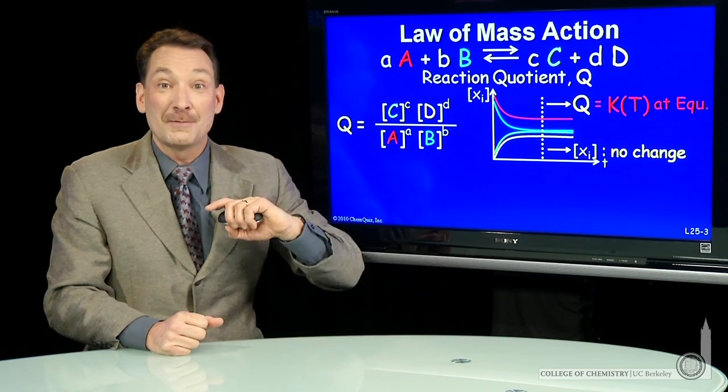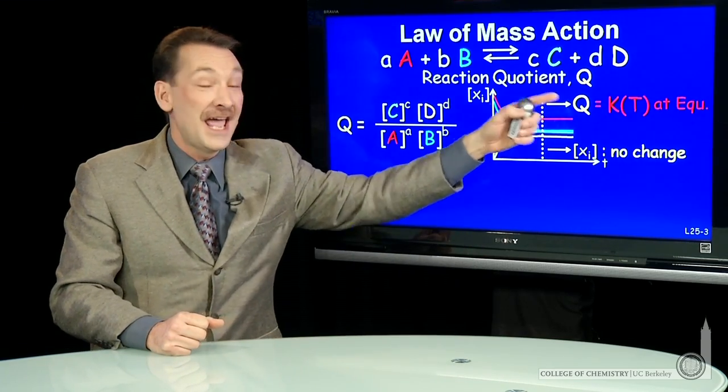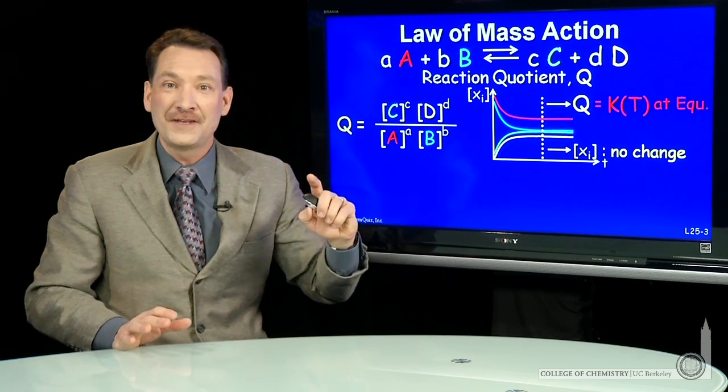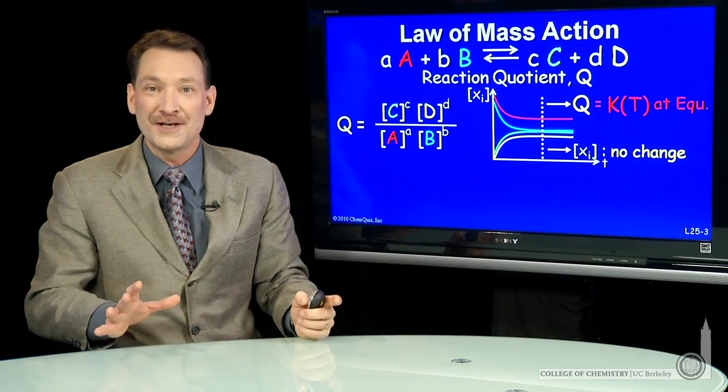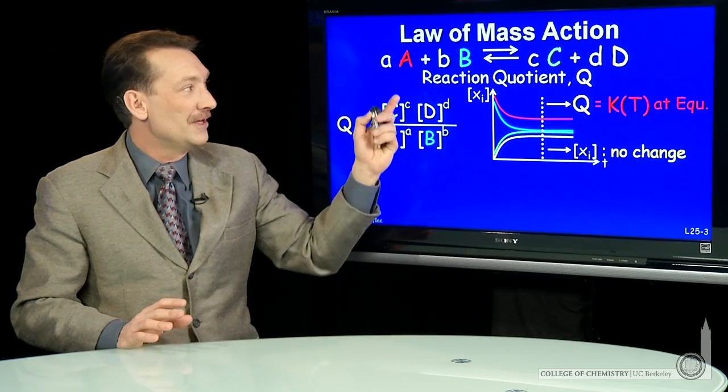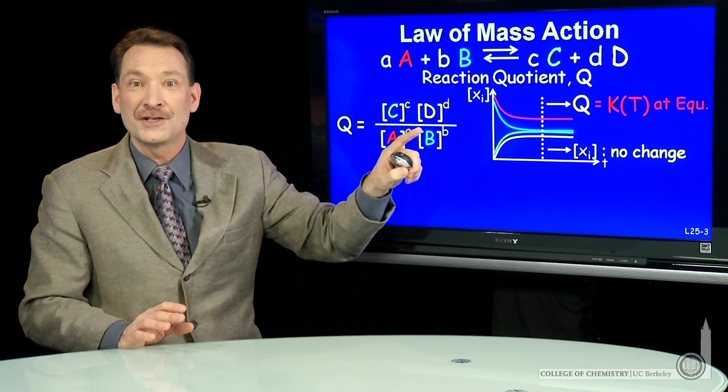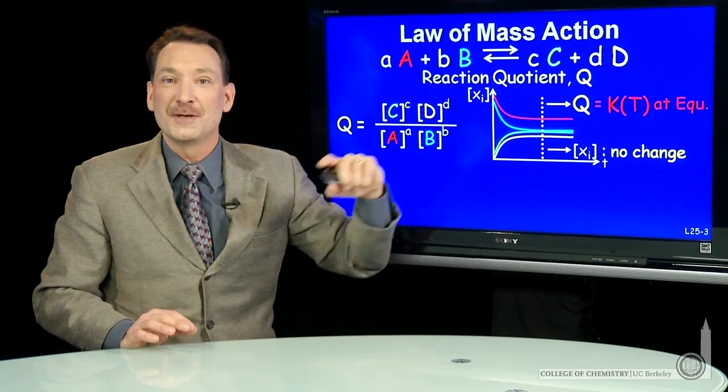Now, the interesting thing about being able to measure this K is if you do it for chemical reactions, you find the value of K is the same at a given temperature, regardless of where you start. So if you start with A and B concentrations high and let the reaction go, Q eventually becomes K.